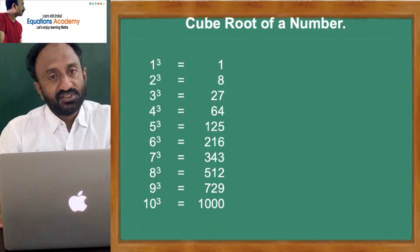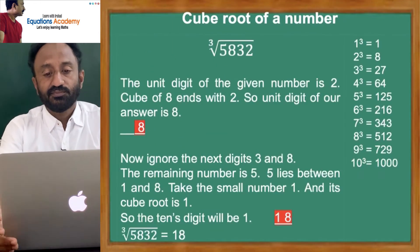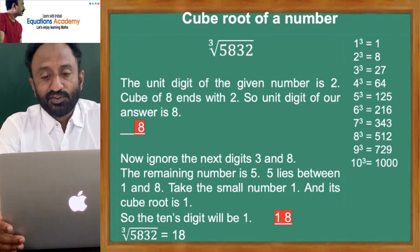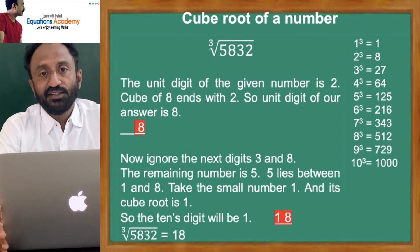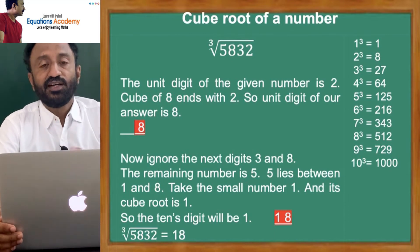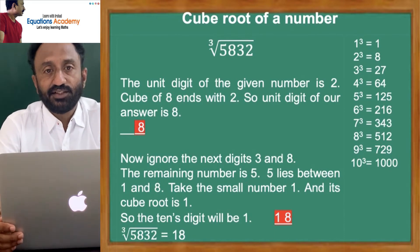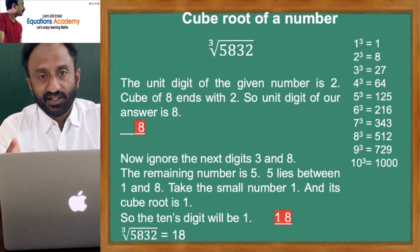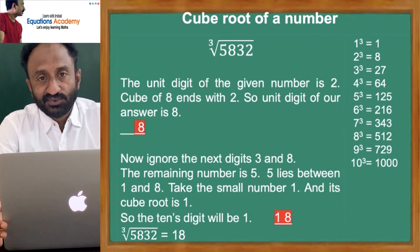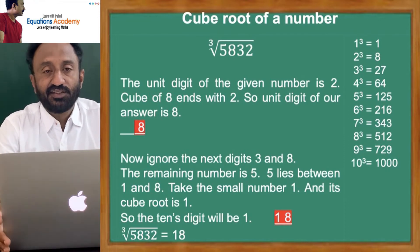Let us start with an example. We need to find the cube root of 5832. I have listed cubes of numbers from 1 to 10 on the board, on the right side of the board.